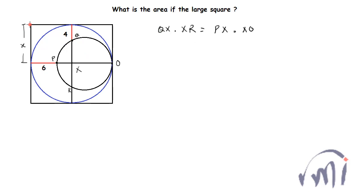If I assume this length is x, then QX and XR will be x minus 4. So (x - 4) multiplied by (x - 4) equals PX, which is (x - 6), multiplied by XO, which is x.